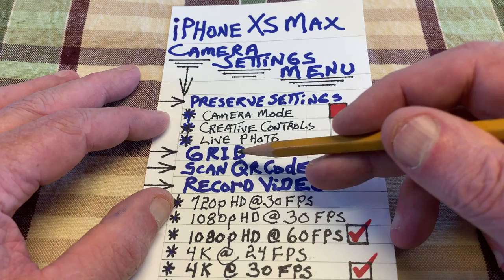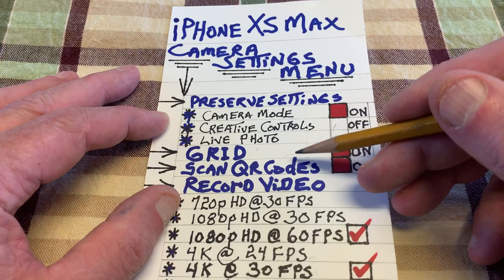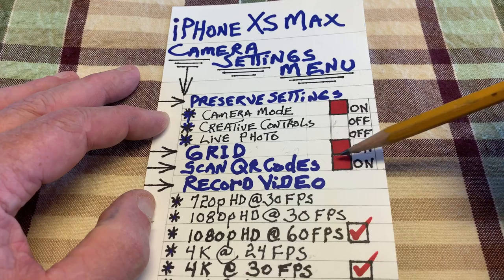You're going to run into Grid. Right now I'm looking at the screen on this iPhone and there's a nice elegant light white grid superimposed over the video. What that does is help you center your subject matter — it's very useful. Turn it on, trust me. I would also recommend that you turn on Scan QR Codes, for barcodes in stores, etc.